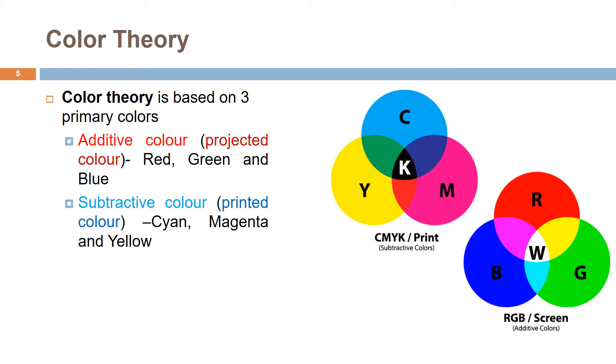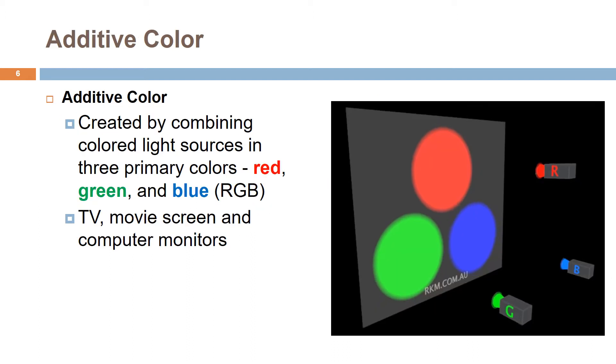The additive primaries red, green, and blue generate color by beginning with absence of color, black, to generate all colors. The three colors are projected onto a screen in various intensities to produce all colors. This principle generates color for televisions, computer monitors, and movie screens.